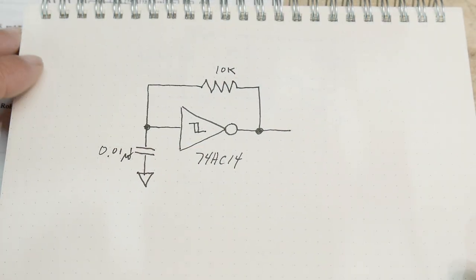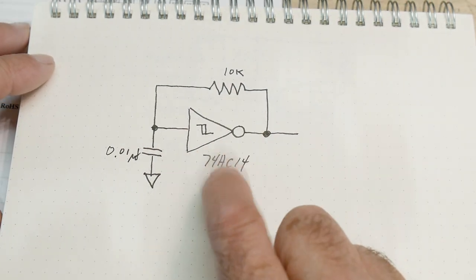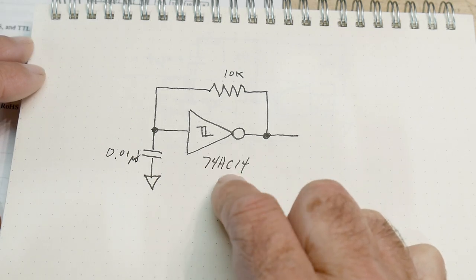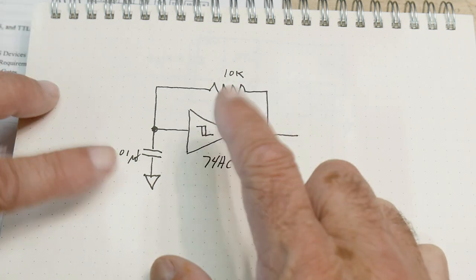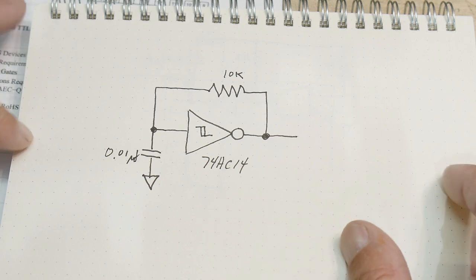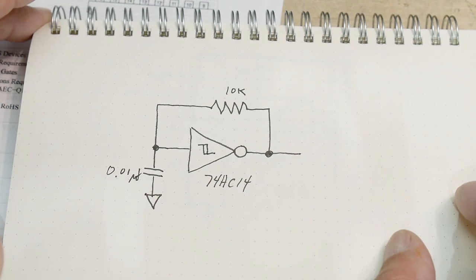All right, quick video for the day. I mentioned the 74HC14 before when we were talking about hysteresis, and I said it was kind of a poor man's hysteresis. You can run them in analog mode. This is an example of running one sort of in analog mode.